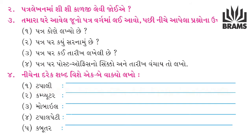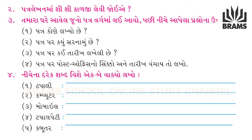હવે આવો, પછી નીચે આપેલા પ્રશ્નોના ઉત્તર આપો. તેનું નામ એ લખવાનું છે — પત્ર પર સરનામું કયું છે? તો જે વ્યક્તિ તમને પત્ર લખ્યો છે અને જો postal officiation નો સિક્કો ન હોય તો પત્ર પહોંચે નહીં — એટલે postal official નો સિક્કો ત્યાં લાગે.